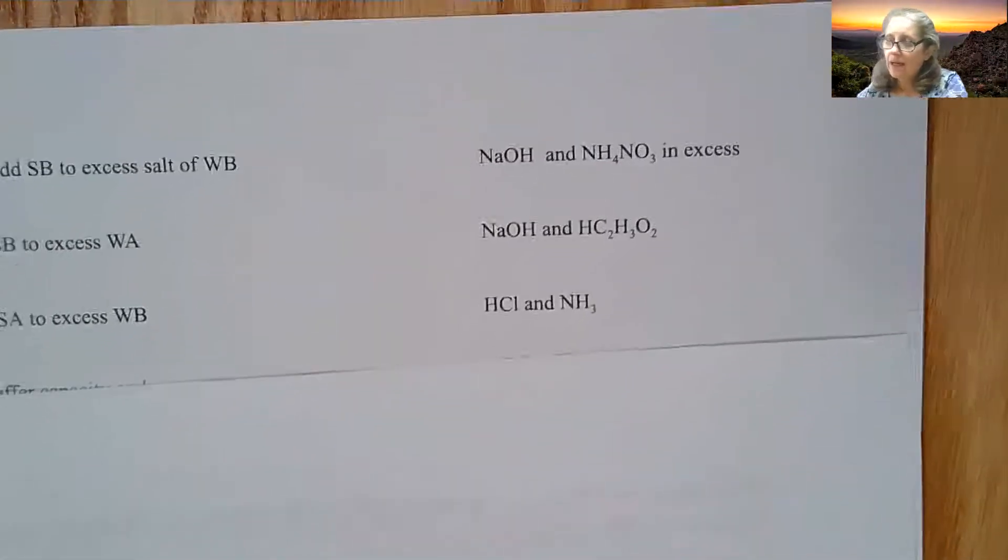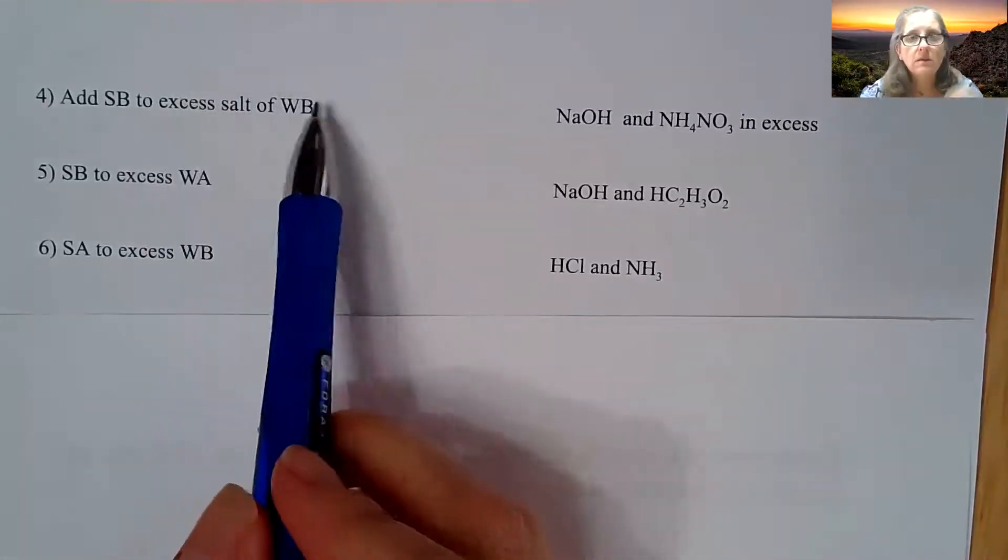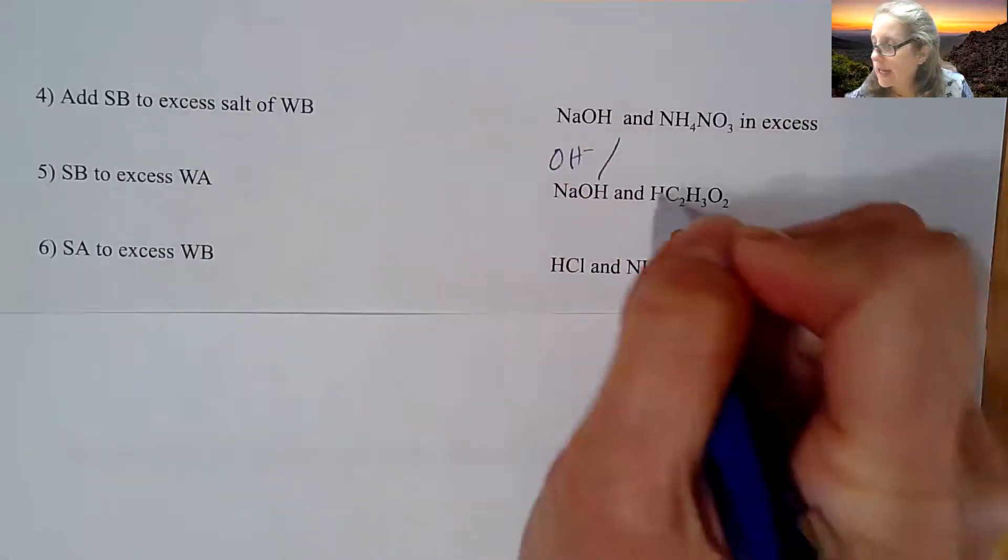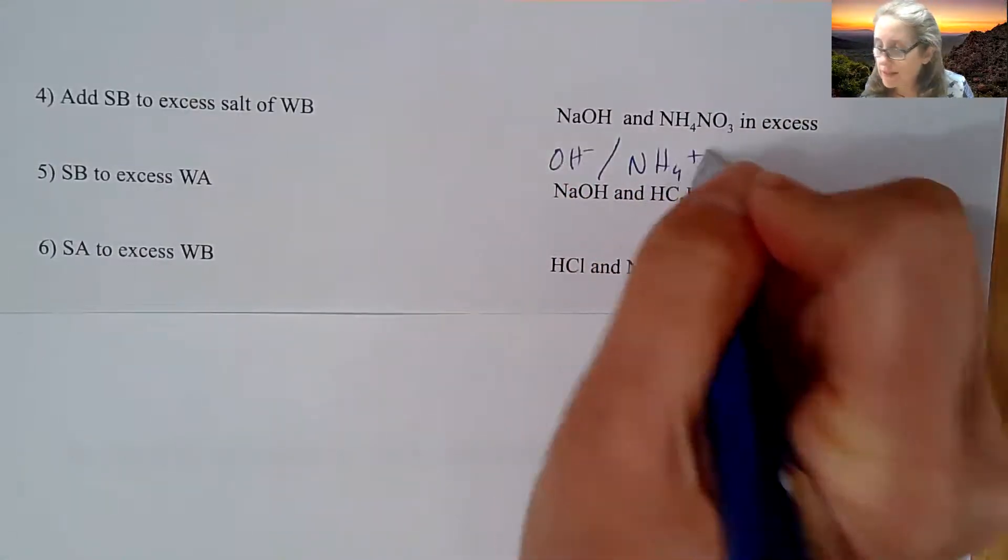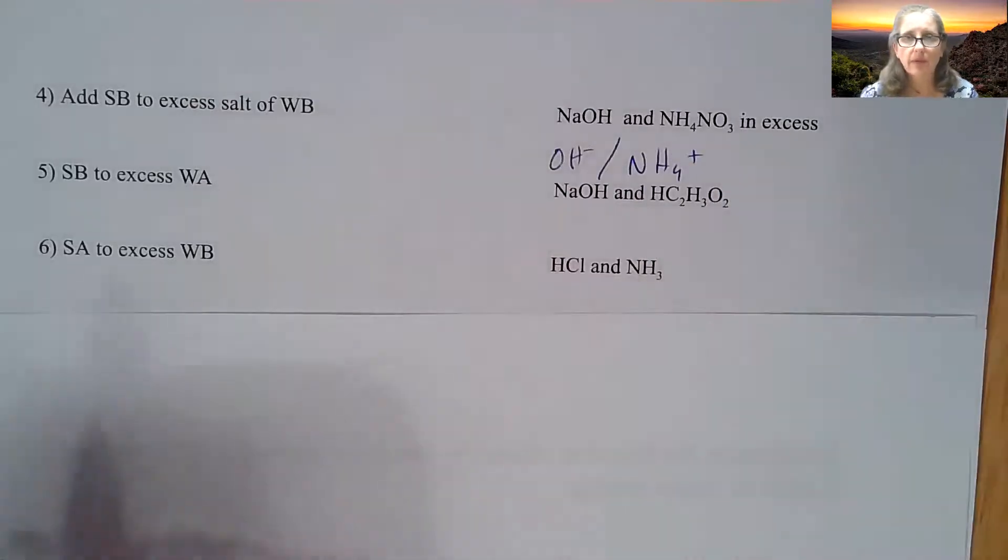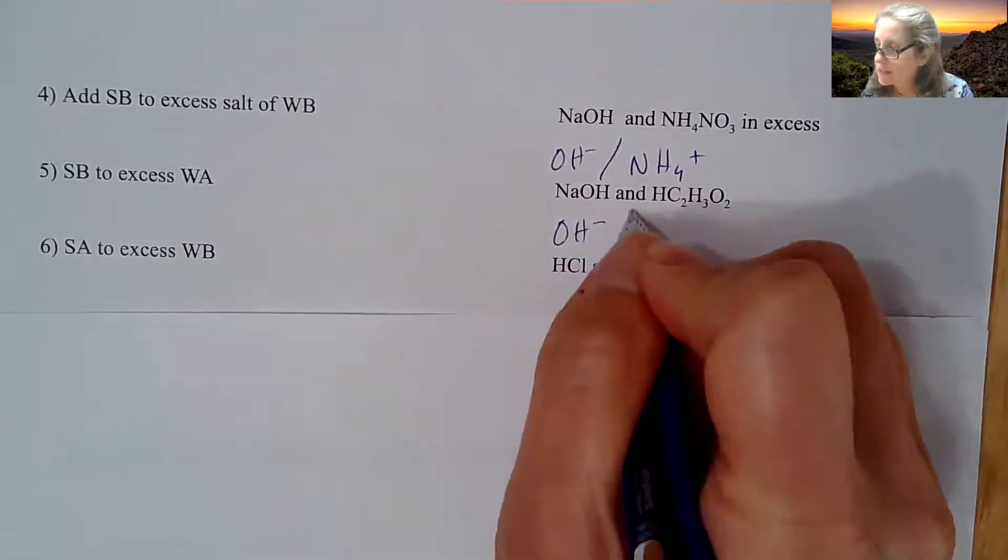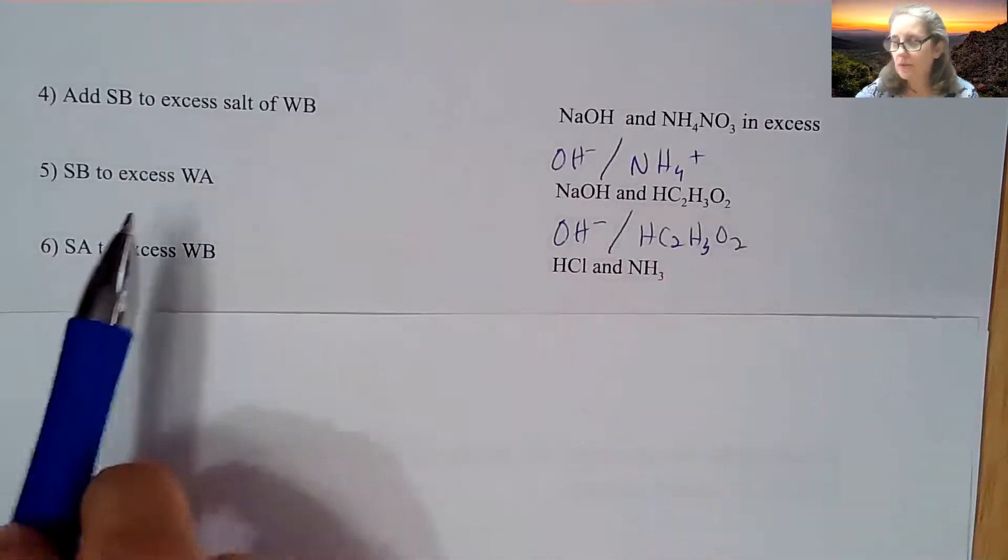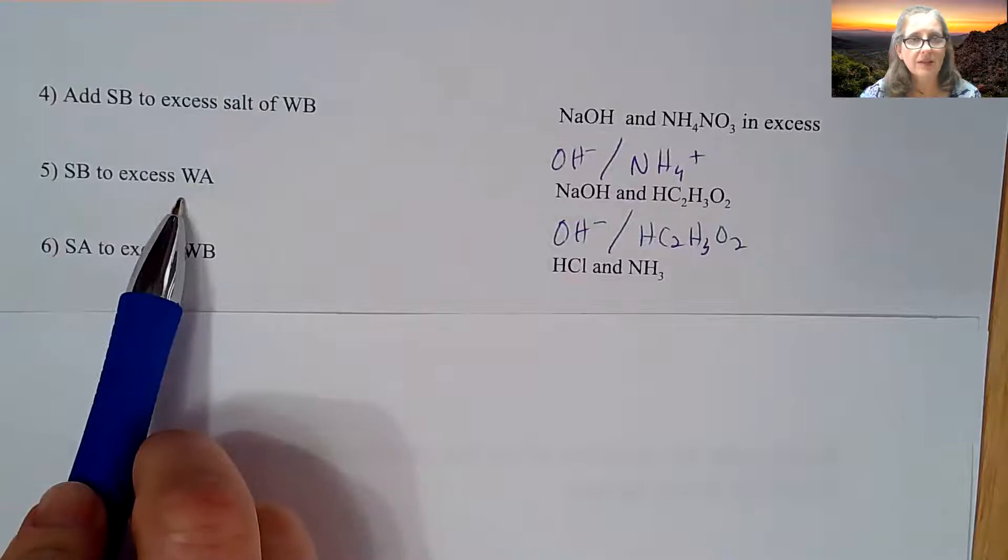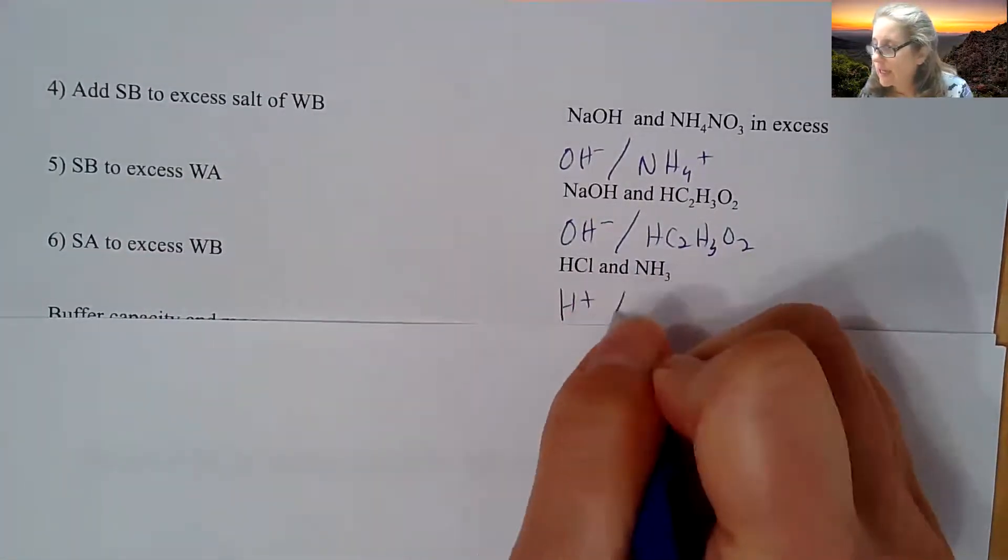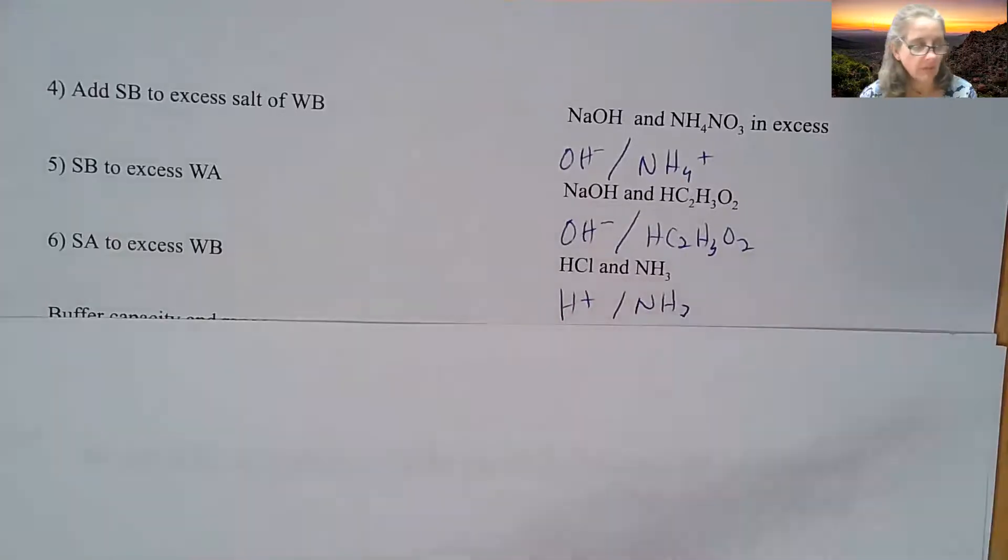What if you add a strong base? Same kind of idea. You could have NaOH, the OH-, and the NH4+ is going to be in excess. OH- and your weak acid, that's another way you can do it. You could do a strong base to an excess of weak acid, or you could do a strong acid and a weak base, but much harder to do.